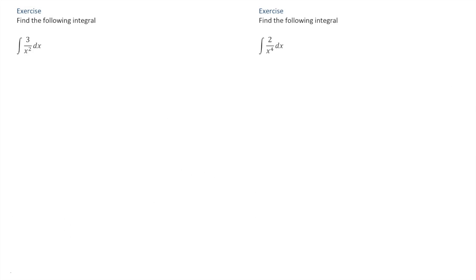As a first example, we're asked to find the integral of 3 over x squared. Using what we just learned, we're going to start by rewriting this integral as follows. We can write 3 over x squared as the integral of 3 times x to the power of negative 2. Now that we've done that, we can use the power rule for integration, giving us 3 over negative 2 plus 1, times x to the power of negative 2 plus 1, plus some constant of integration c.